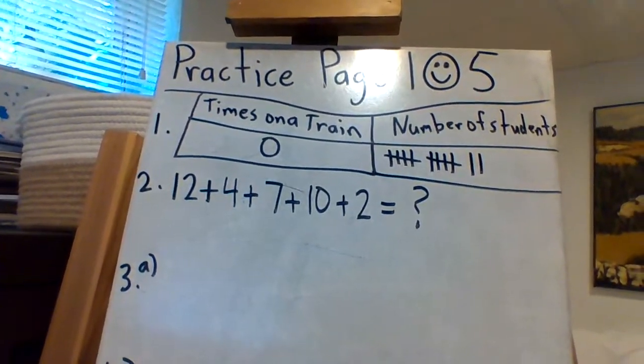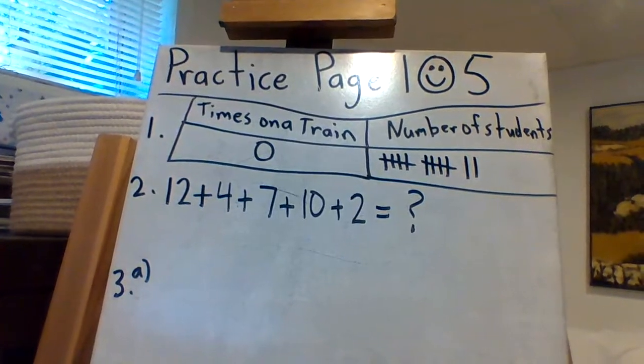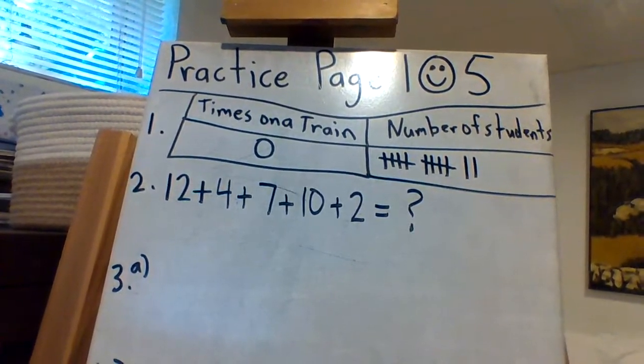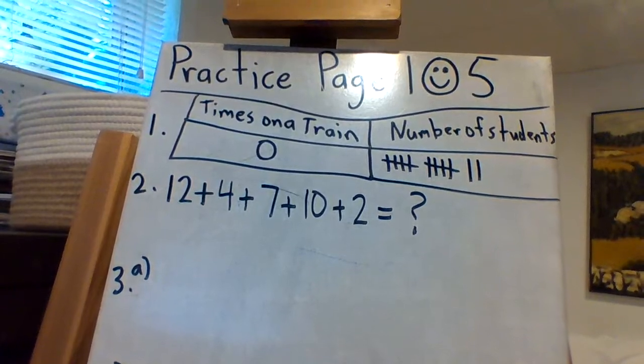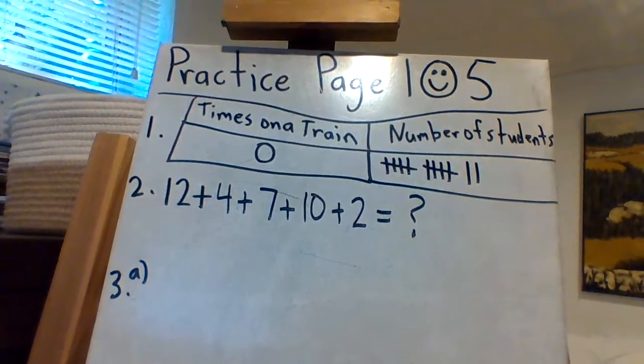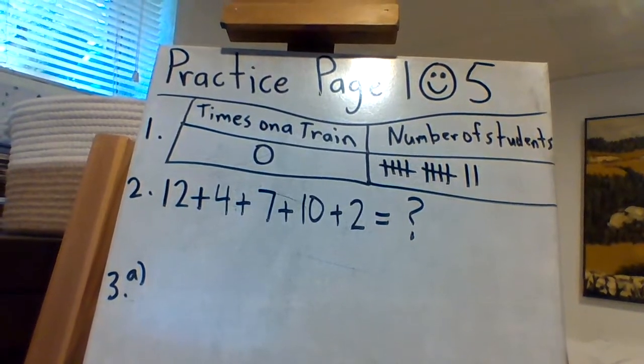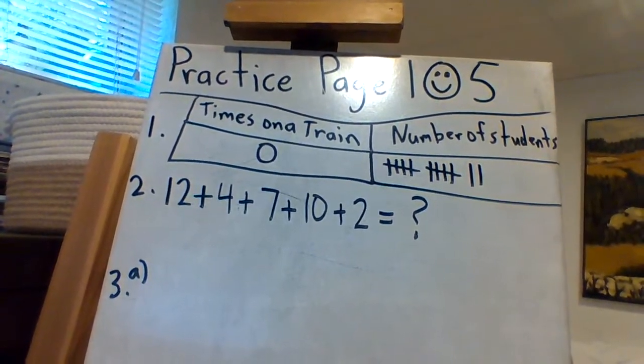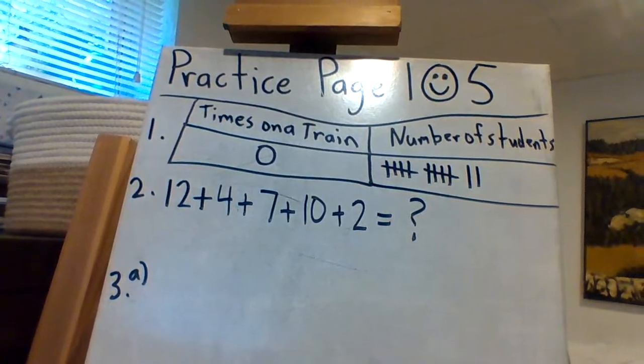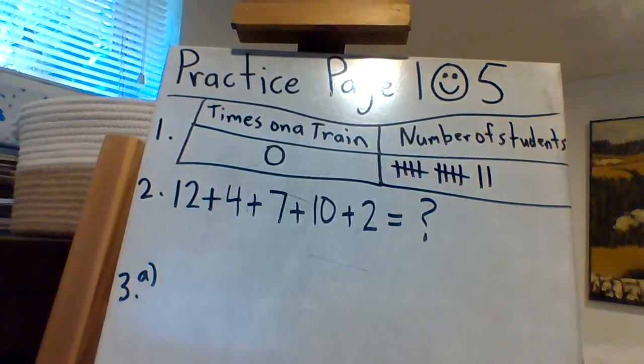Now the first question says some children were asked how many times they have been on a train. Okay, so you can see that we have a tally graph there, tally chart, tally table beside it, and it says times on the train: zero, one, two, three, and more than three, the number of students, and there's tallies.